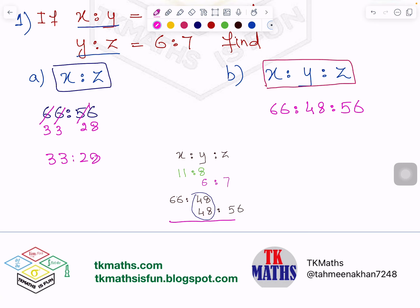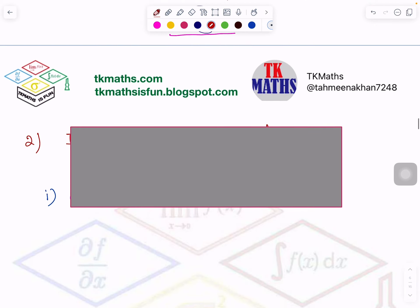So I will cancel it by the table of 2. 2 times 3 is 6, 2 times 3 is 6, 2 times 2 is 4, 2 times 4 is 8, 2 times 2 is 4, 2 times 8 is 16. So now my ratio is 33 is to 24 is to 28. If you can further simplify, you will. If you cannot, you will leave it here.